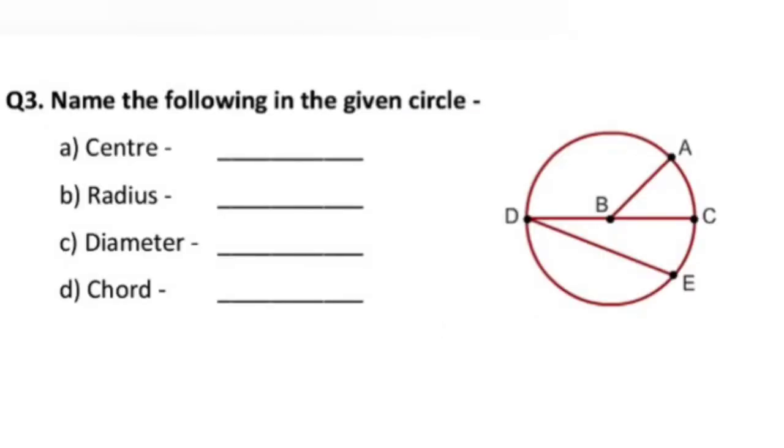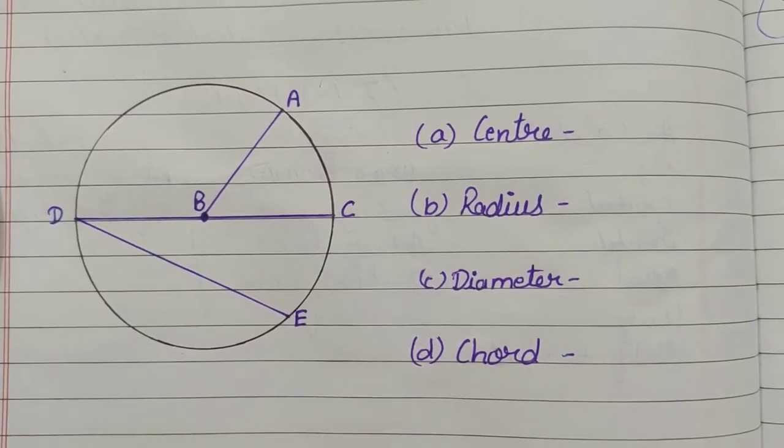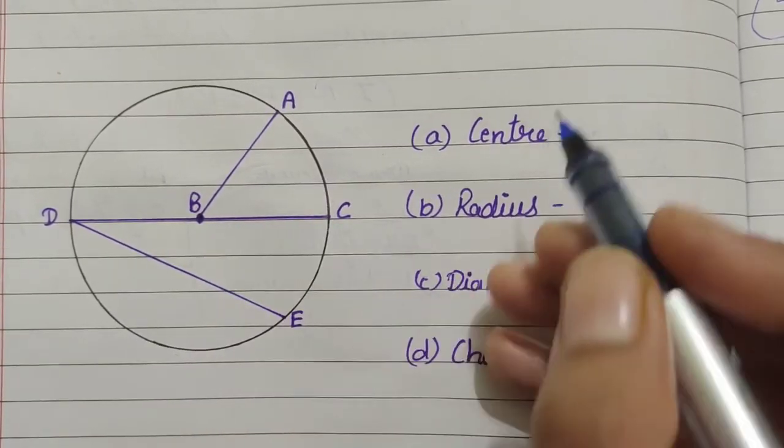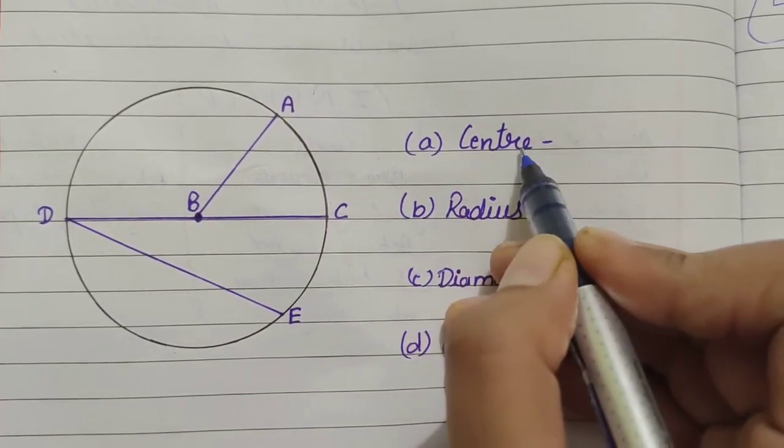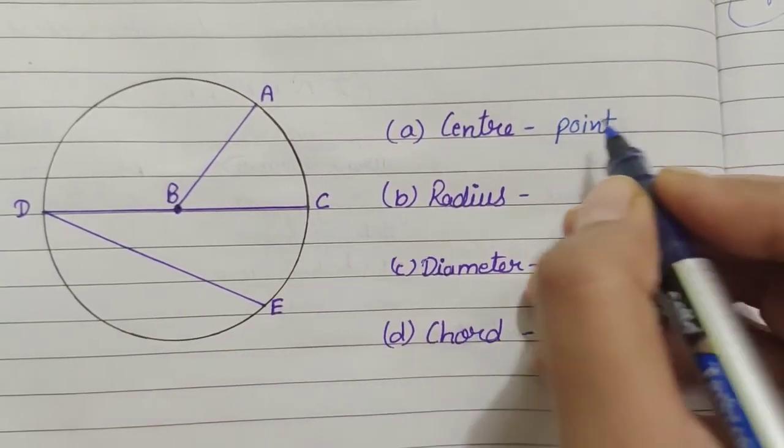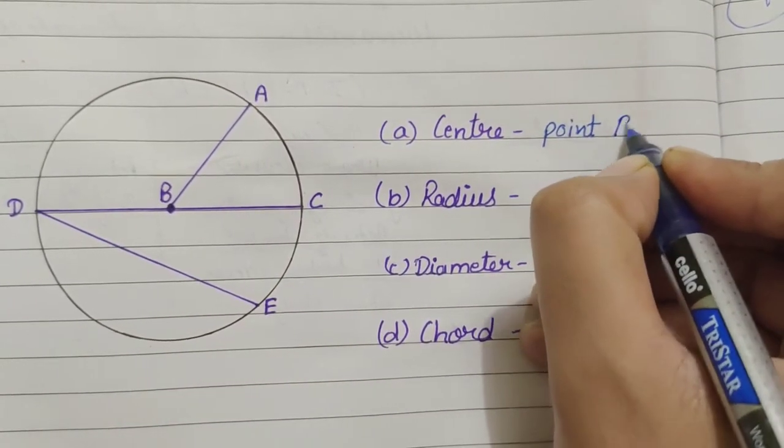Now, question number 3 is, name the following in a given circle. Now, let's see how to name parts of a circle. So, here, first of all, we have to name the center. Here, the center is point B. So, here you will write point B.